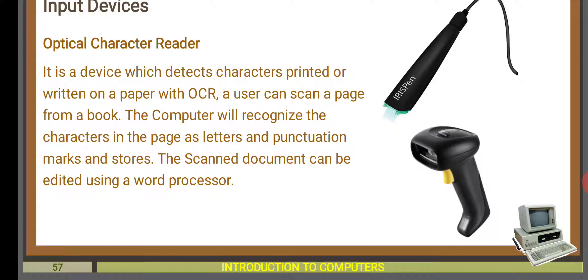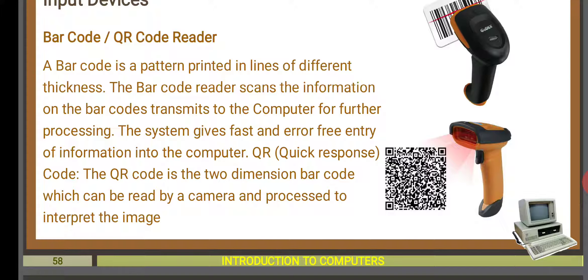The next input device is the barcode scanner or barcode reader, and the QR code reader. These are used for scanning barcodes and QR codes. Barcodes are made up of thick and thin lines, while QR codes are rectangular boxes with a square pattern. These machines scan both barcodes and QR codes.